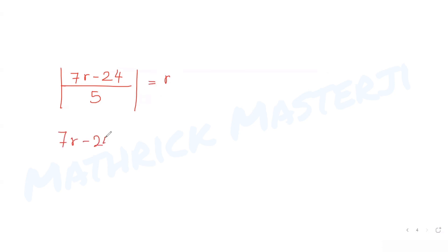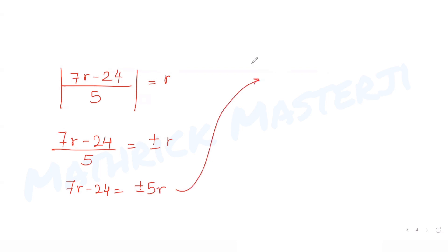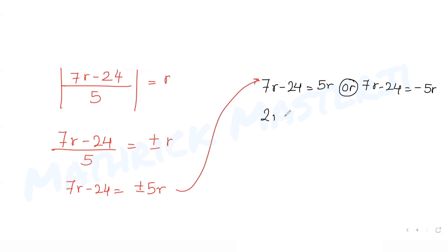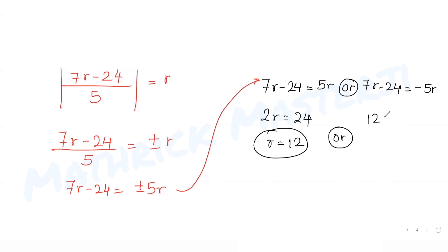Removing the absolute value gives 7r - 24 = ±5r. This yields two equations: 7r - 24 = 5r, giving 2r = 24 so r = 12; or 7r - 24 = -5r, giving 12r = 24 so r = 2.